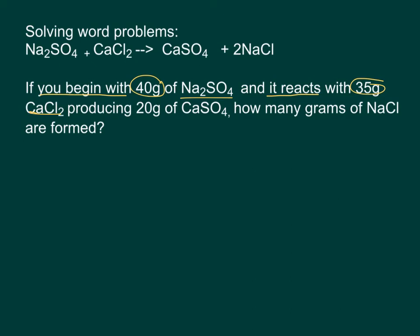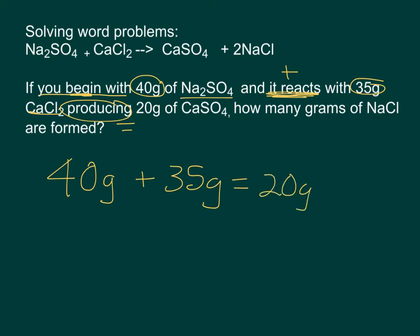The first thing I'm going to say is, since I'm beginning with something, that means it's a reactant. So I'm going to say 40 grams of Na2SO4. It reacts with, that's the same as a plus sign, 35 grams of this other compound. And it produces, so that's the same as an equal sign, 20 grams of CaSO4.